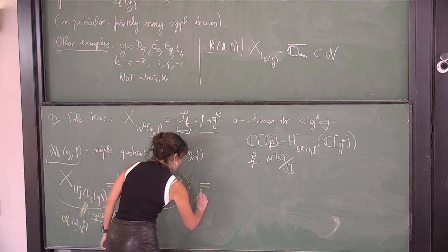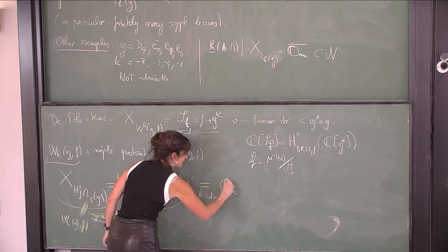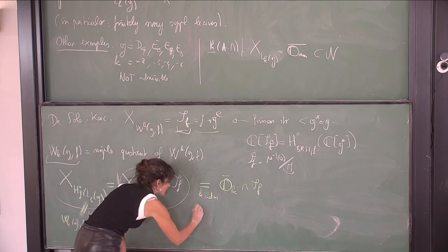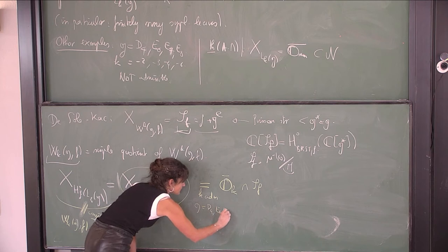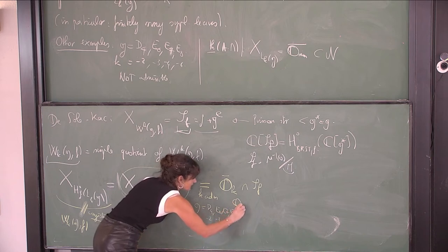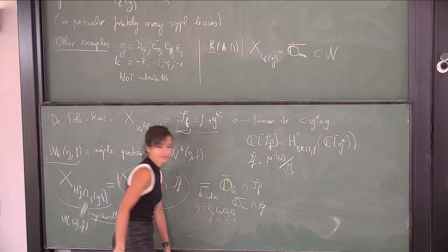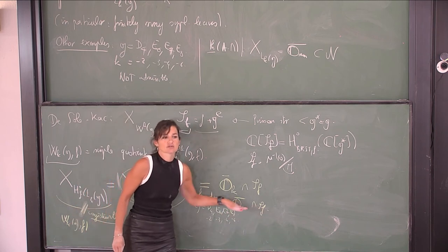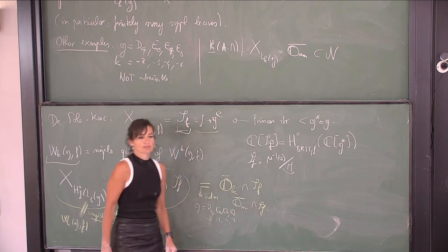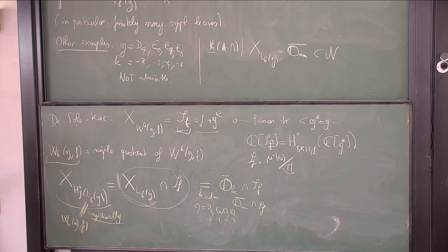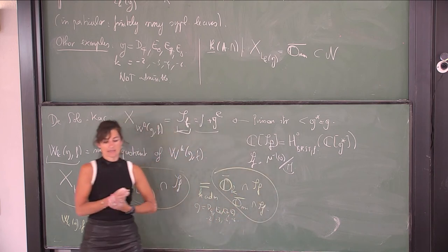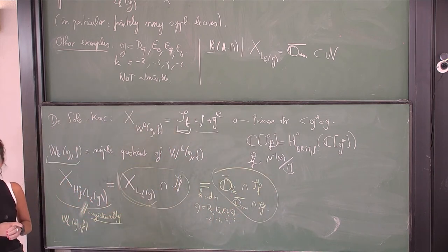For example, if k is admissible you get the intersection with the nilpotent Slodowy slice. For G = D4, E6, E7, E8 at the special levels from our theorem, you get either a point or the closure of the minimal nilpotent orbit — since in the closure of O_min there is just O_min and zero. This is how nilpotent Slodowy slices appear in this context.